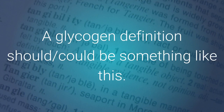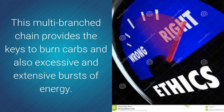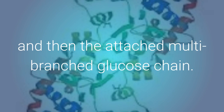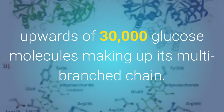A glycogen definition: it is a multi-branch polysaccharide of the glucose molecule which serves as an energy storage molecule in humans and animals. This multi-branch chain provides the keys to burn carbs and also extensive bursts of energy. The glucose molecule contains a core protein glycogenin and the attached multi-branch glucose chain. One glycogen molecule has upwards of 30,000 glucose molecules making up its multi-branch chain.